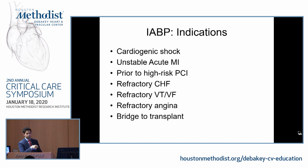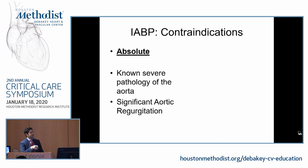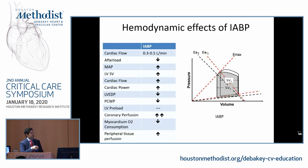Contraindications for the intra-aortic balloon pump: absolute contraindications include known severe aortic pathology or severe aortic regurgitation. Relative contraindications include severe peripheral vascular disease, abdominal aortic aneurysms, or mild aortic regurgitation.